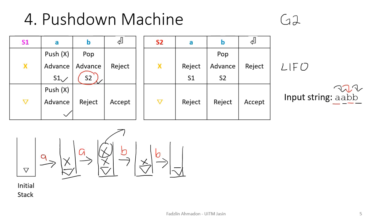We read X with B again — it says pop and advance. So we pop the other X from the top of our stack and advance. We have finished reading all of the input symbols, so at the end of the input string there is an end marker. When we read bottom marker and end marker, it says accept. This means the input string AABB is accepted and is one of the strings that can be generated by grammar 2.